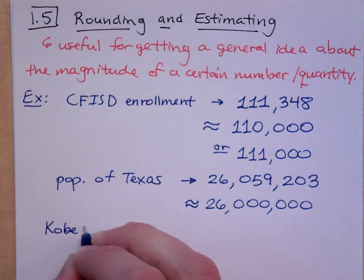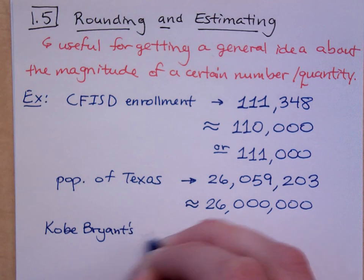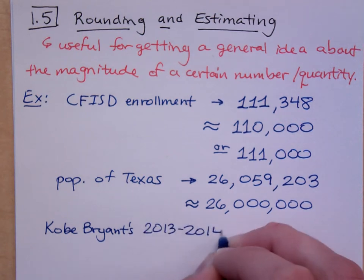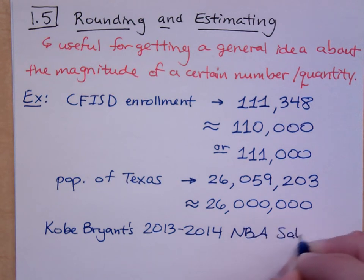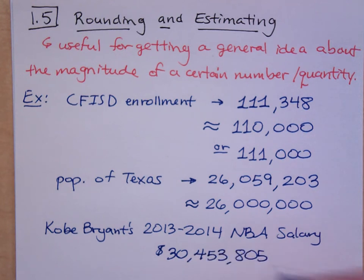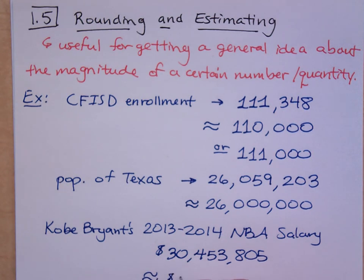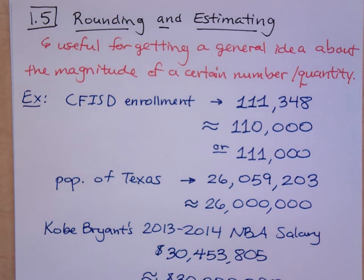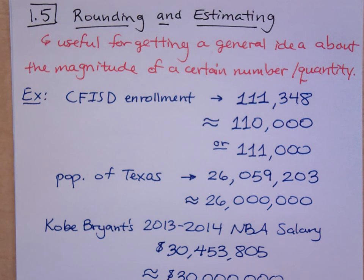Here's a fun one: Kobe Bryant's 2013-2014 NBA salary. He is the highest paid basketball player right now in terms of salary. His salary is thirty million, four hundred fifty-three thousand, eight hundred five dollars. But if you were talking with your friend, you'd say Kobe Bryant makes about thirty million dollars, right? It's not a hundred percent accurate, but it still conveys the size of his salary. That's a good estimate.